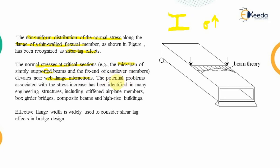This potential problem is present in many engineering structures — for example, box girder bridges (closed sections), composite beams, and high-rise buildings. All of these experience this non-uniform stress distribution, which is commonly known as the shear lag effect.